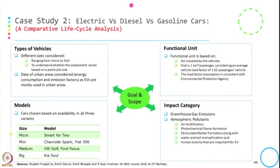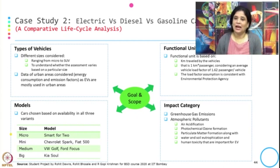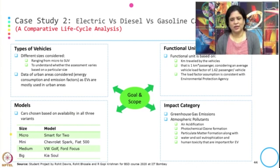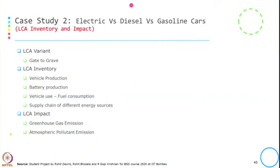The functional unit is kilometers traveled by the vehicle, with load factors as per the Environmental Protection Agency. The goal is to understand how the impact changes for different kinds of vehicles from different fuel sources. The scope covers greenhouse gas emissions and atmospheric pollutants — specifically air acidification, photochemical ozone formation, water and soil eutrophication, and human toxicity. The LCA variant used is gate to grave, and the inventory covers vehicle production, battery production, vehicle use (fuel consumption), and supply chain of different energy sources.